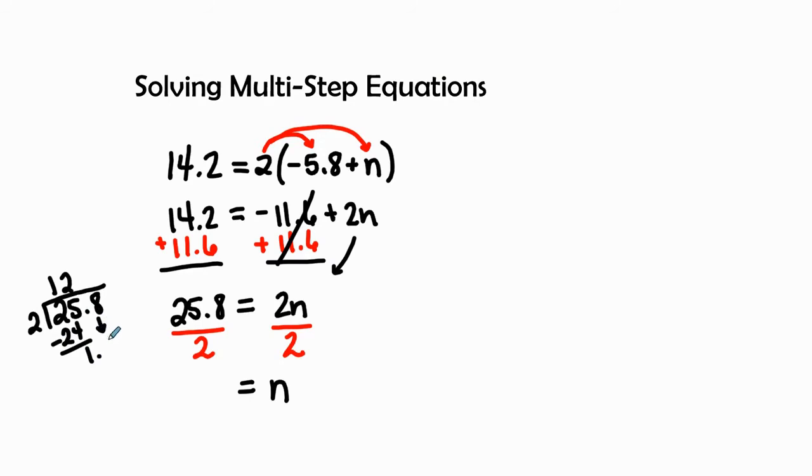Then I'm going to bring my 8 down. I didn't bring this 2 down because I could do that mental math—it's a little trick that I have. Bring my decimal, 2 goes into 1.8 nine times, and so 2 times 9 is 1.8 or 18, that gives me 0. So 25.8 divided by 2 is 12.9.